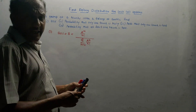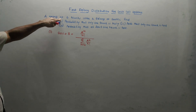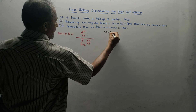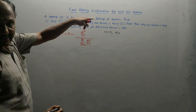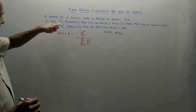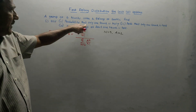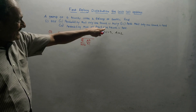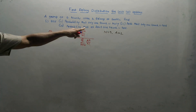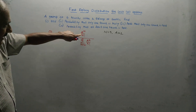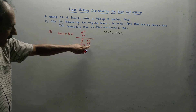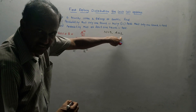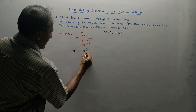Let us solve a numerical using this first Erlang distribution formula. A group of five trunks offers two Erlangs of traffic — so N equals 5 and A equals 2. We need to calculate: first, GOS (Grade of Service); second, probability that only one trunk is busy; third, probability that only one trunk is free; fourth, probability that at least one trunk is free. For the first part — Grade of Service — the formula B equals a raised to N upon N factorial, divided by summation from k equals 0 to N of a raised to k upon k factorial.